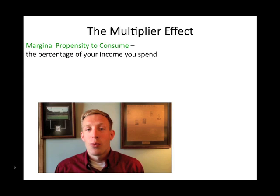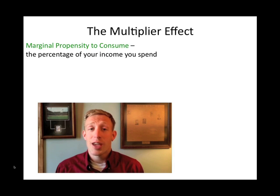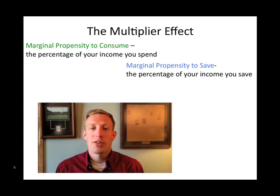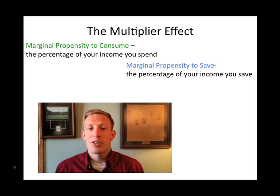The rest of it is typically left to savings, which is called the marginal propensity to save. So if you decide to spend half of your income and save half of your income, the marginal propensity to consume would be 0.5 or 50%, and the marginal propensity to save would be 0.5 or 50%.